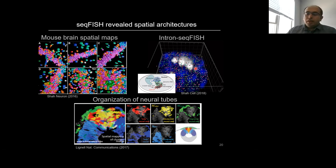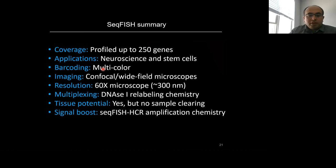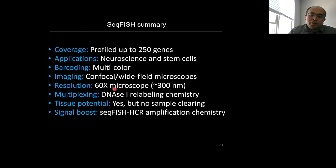To summarize sequential FISH: it currently allows looking at up to 250 genes, with applications in neuroscience and stem cells. Multi-color labeling is used and any confocal or widefield microscope works, though confocal is preferred for tissues. Imaging should be done at 60x or 100x. DNase chemistry enables relabeling of the same RNA target, and tissue compatibility is provided by HCR chemistry.